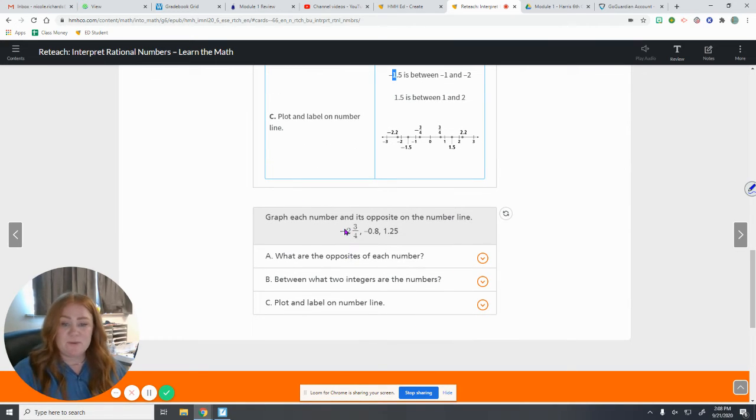If we were doing each of these, first we want to think of the opposites of each one. Before you drop these down, try and answer the questions yourself. The opposites of negative 2 and 3/4 becomes positive. The opposite of negative 0.8 becomes positive. The opposite of 1.25 becomes negative.